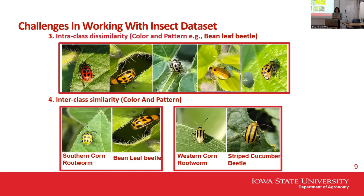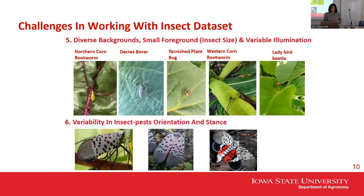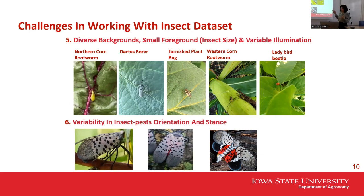The third challenge is intraclass dissimilarity — the same class and species but different patterns. The fourth challenge is interclass similarity — two different species that look similar, like southern corn rootworm versus bean leaf beetle. The fifth challenge is diverse backgrounds with small foreground objects, like leaf hoppers that are less than five millimeters — green on green, brown on brown — which is a major challenge for ML.